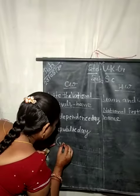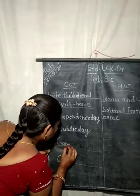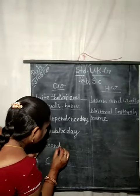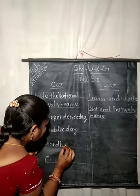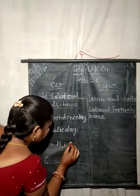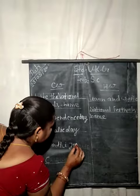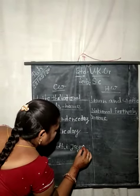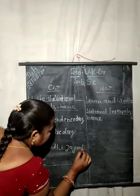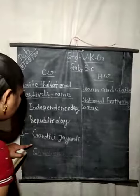G, A, N, D, H, I. Gandhi Jayanti. G, A, Y, A, N, T, I. Gandhi Jayanti.